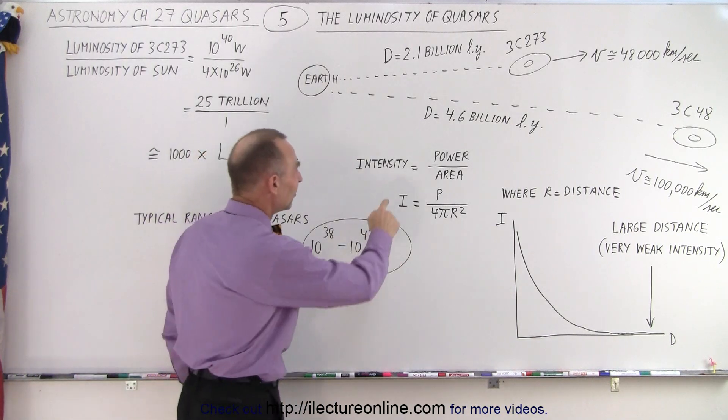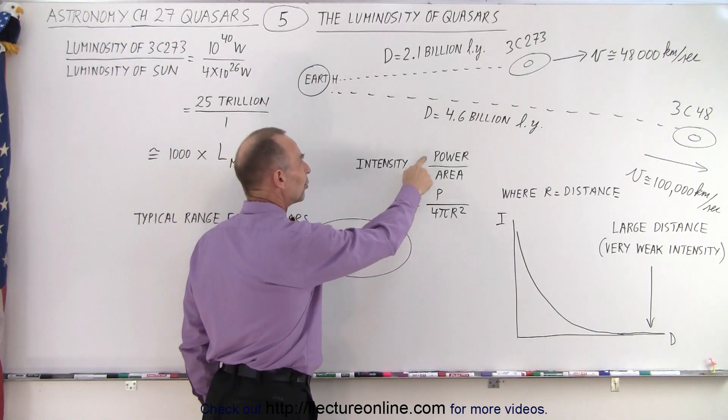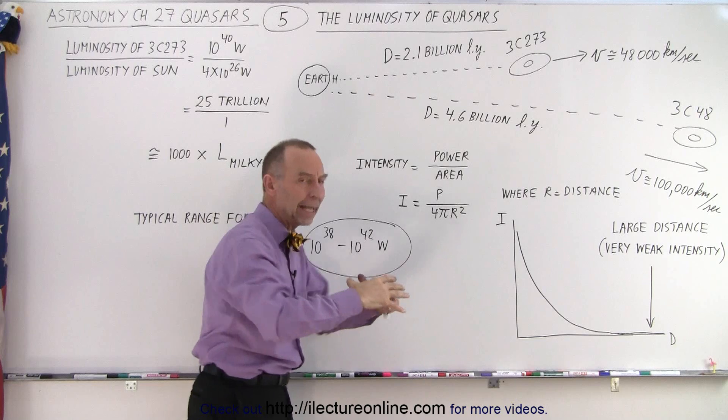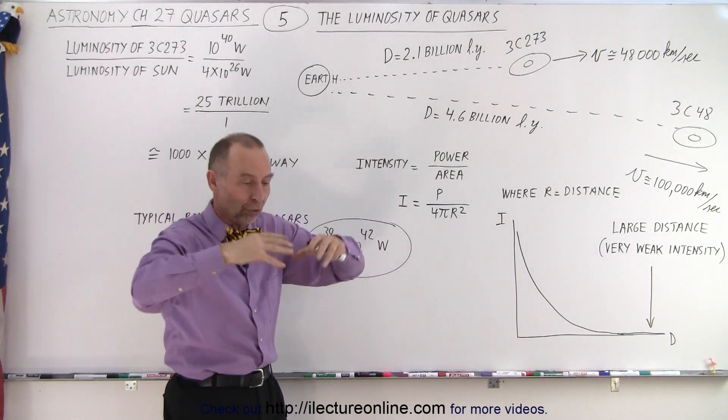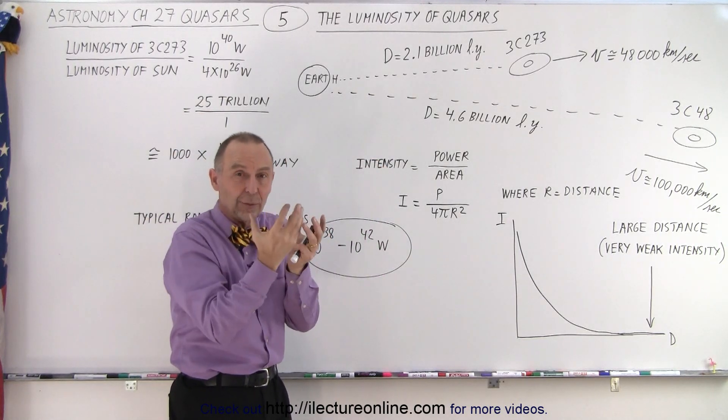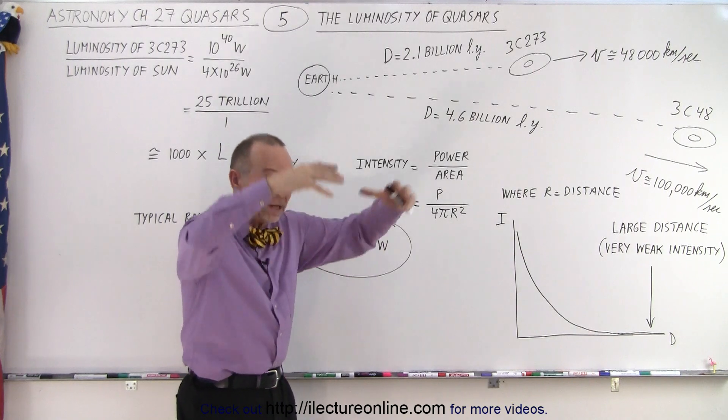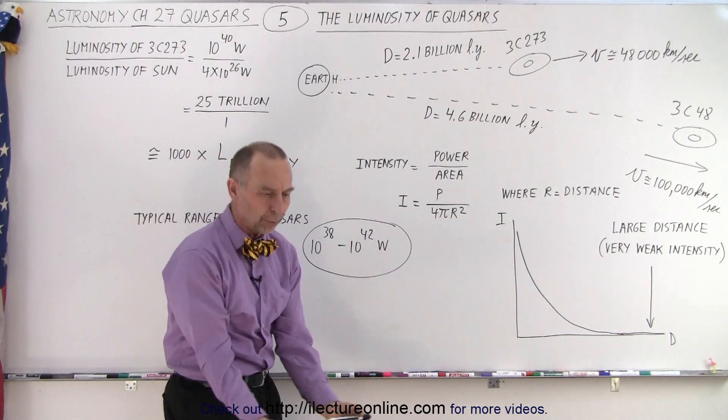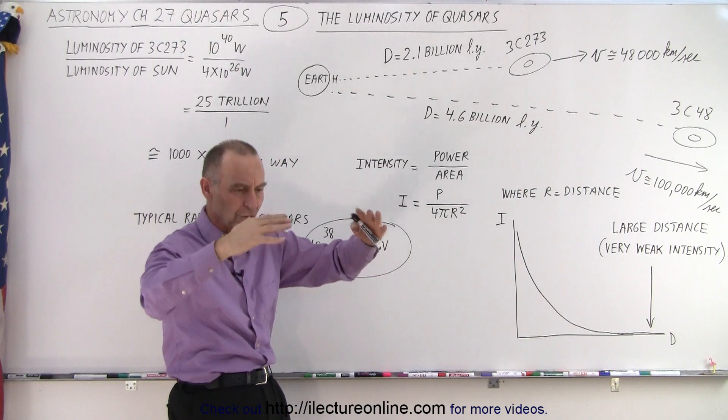Notice that the intensity of any signal is equal to the power of the signal divided by the area over which it spreads. Now of course, radio signals that are generated somewhere in space, they spread out in all directions. It's kind of like a beach ball or a balloon that gets blown up and the signal is divided over wider and wider and wider area.